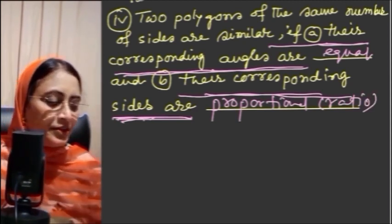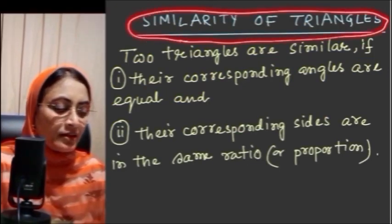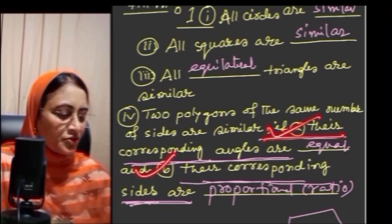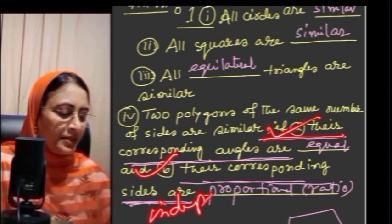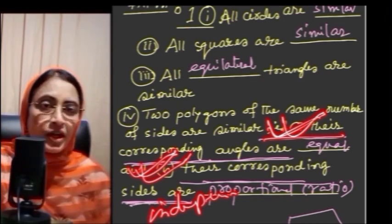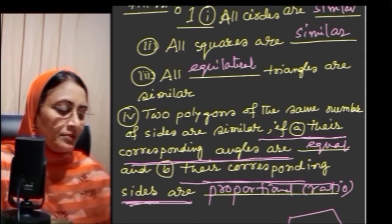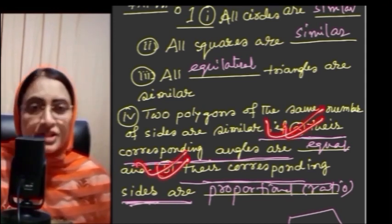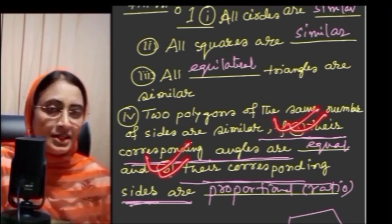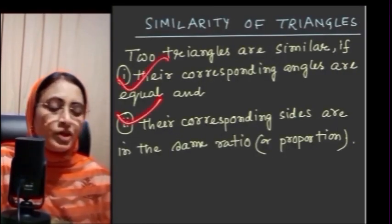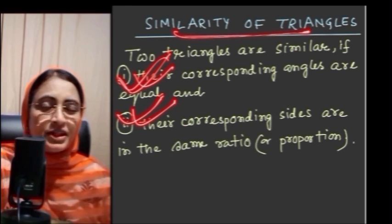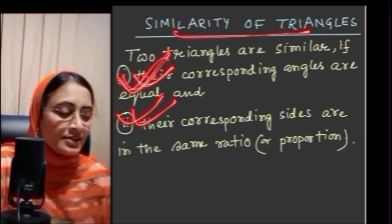Next, similarity of triangles. Similarity of triangles is different from similarity of polygons. In case of similarity of polygons, these two conditions — equal corresponding angles and proportional corresponding sides — are independent of each other. That means either condition alone without the other is not sufficient for the polygons to be similar. But in case of triangles, these two conditions are not independent — if one criteria is fulfilled, the second criteria is automatically fulfilled. This is what makes triangles different from other polygons.